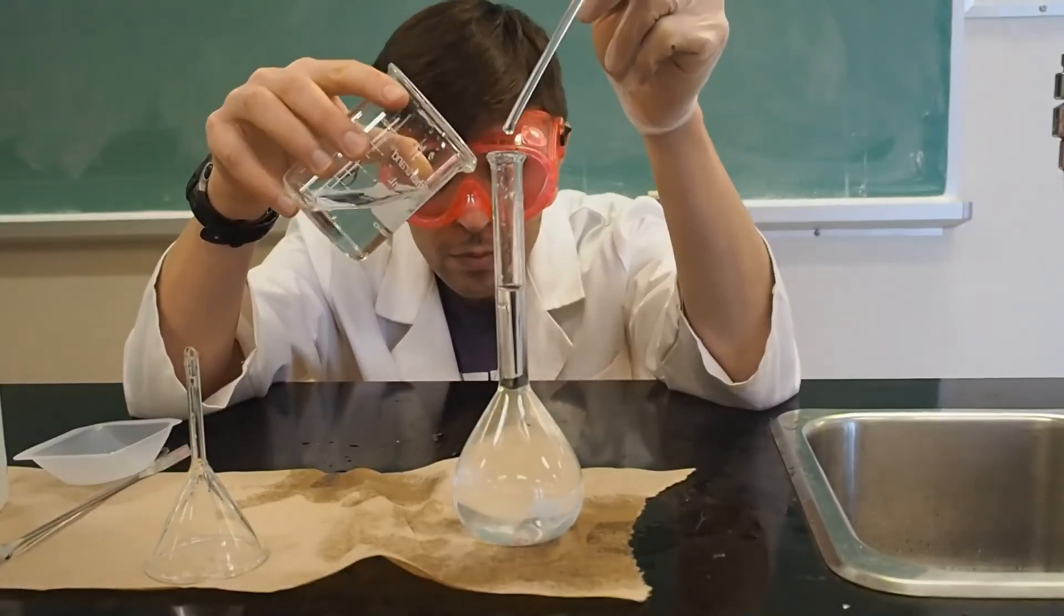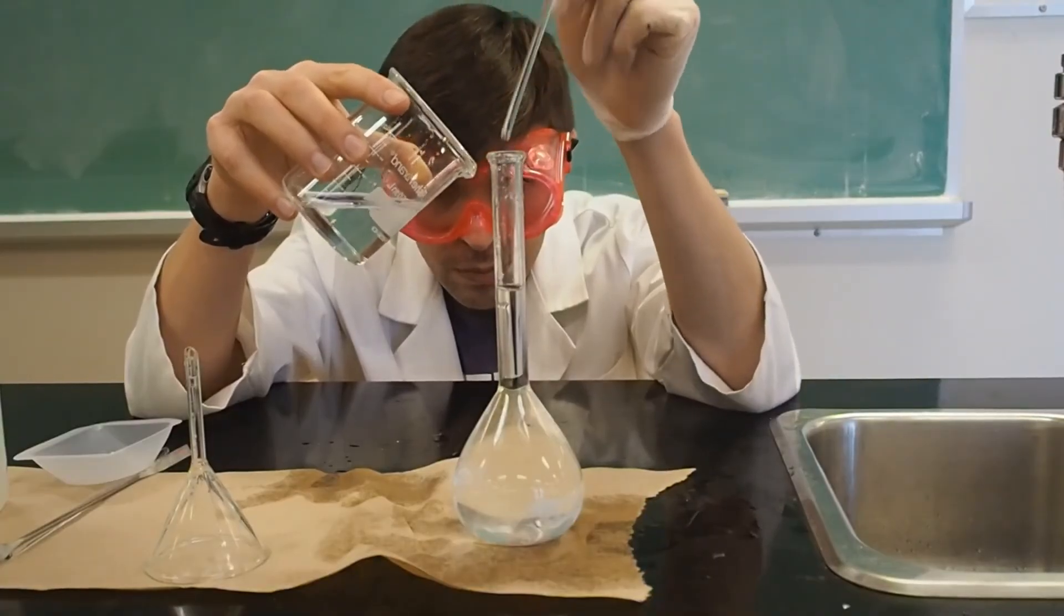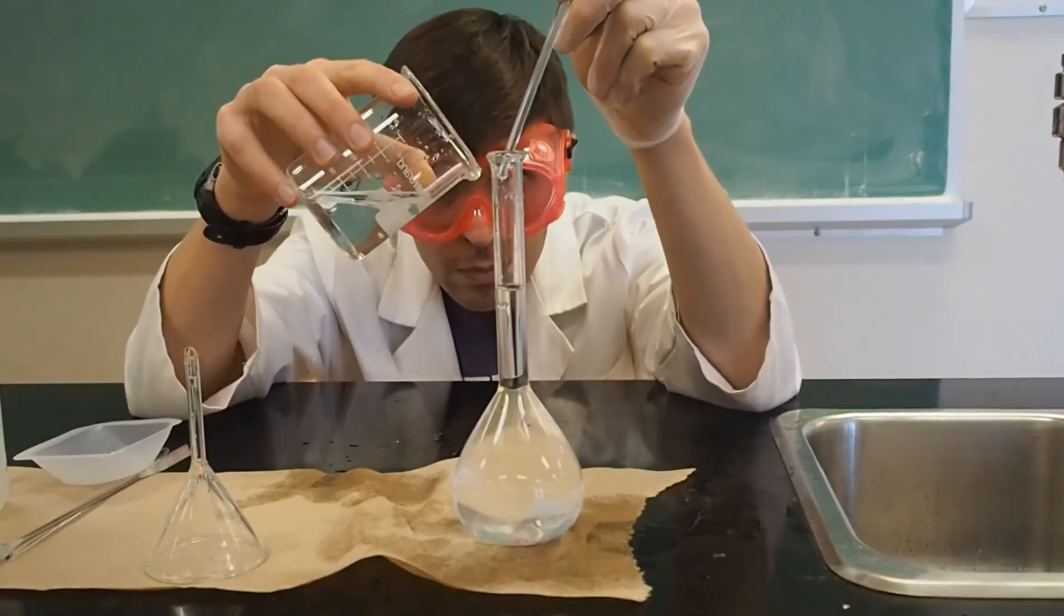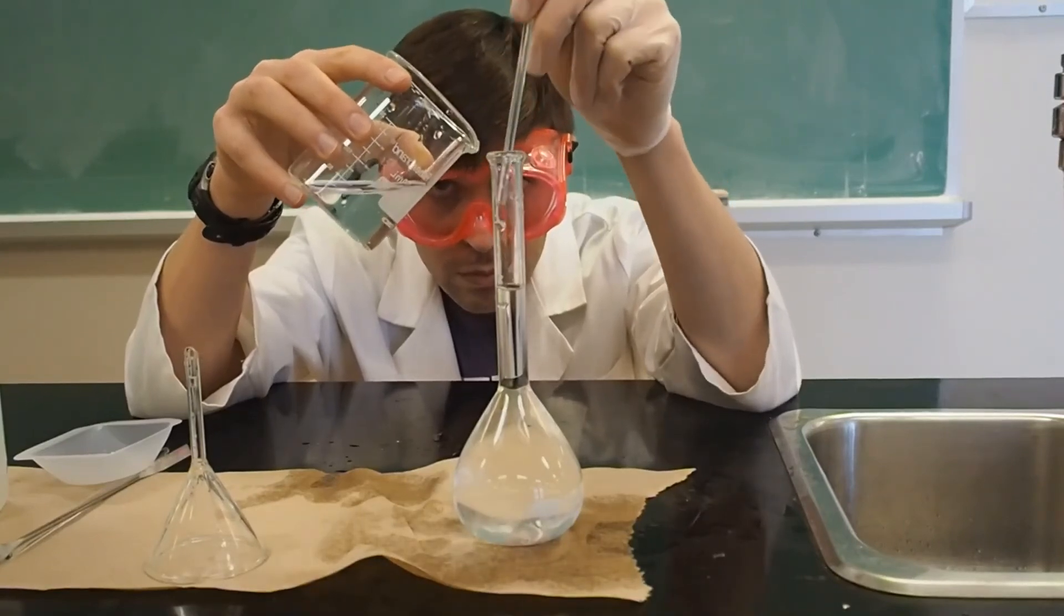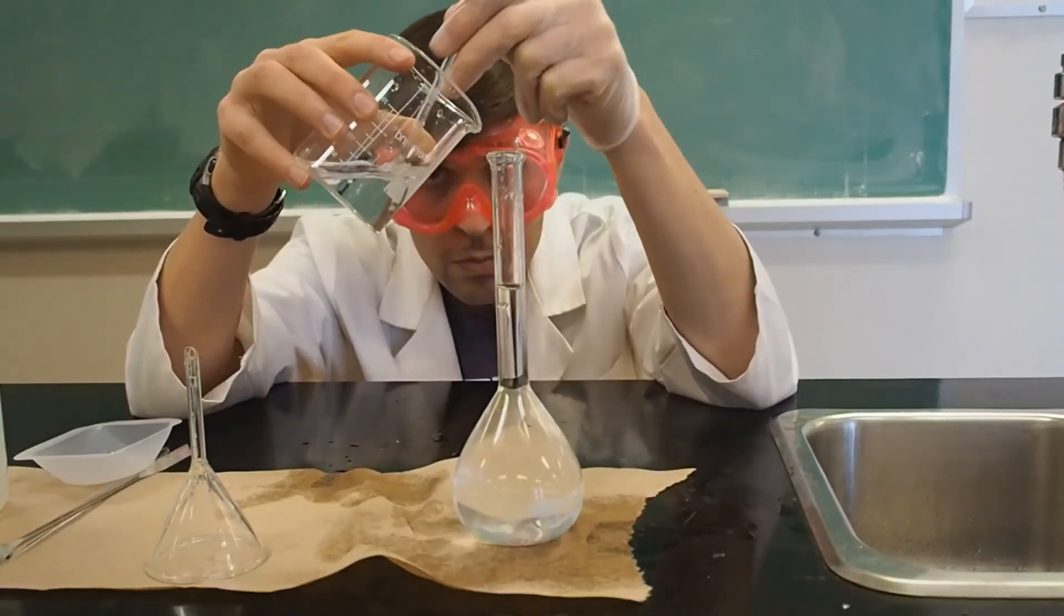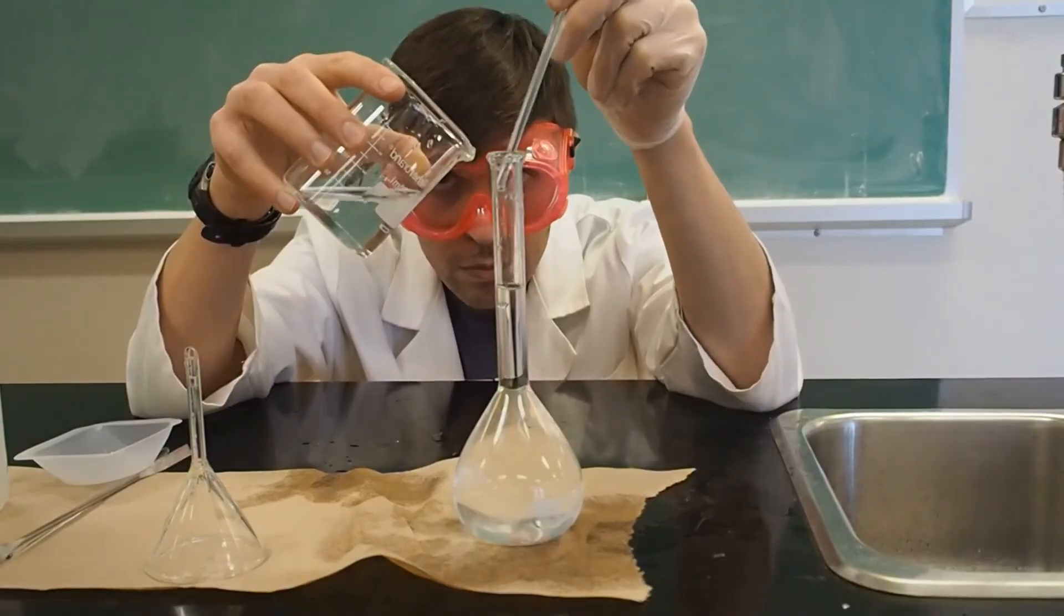When water is in a container, it forms a curved line called a meniscus. It kind of looks like a smile that is more pronounced the smaller the diameter of the container.